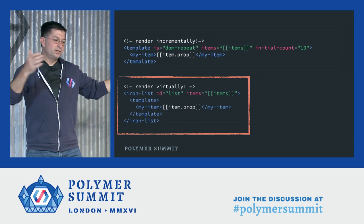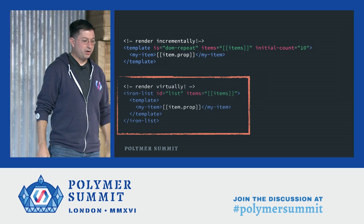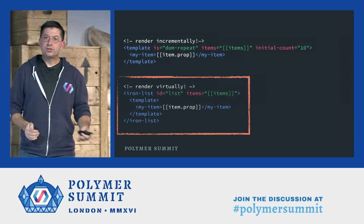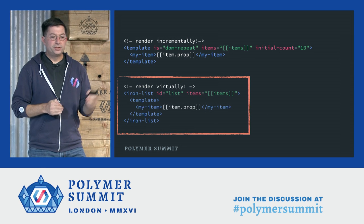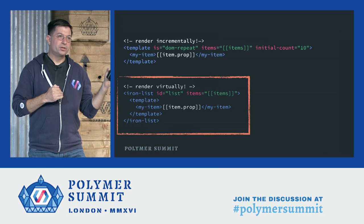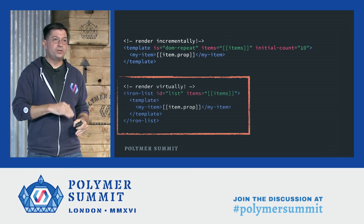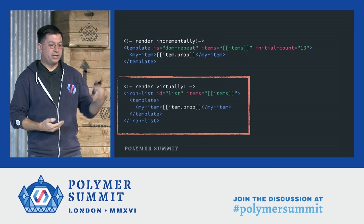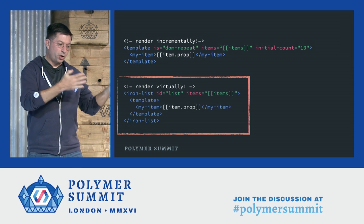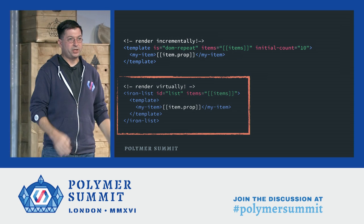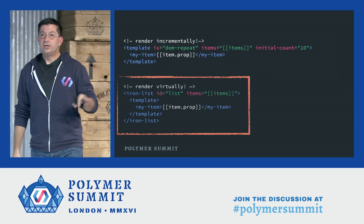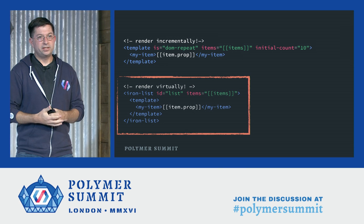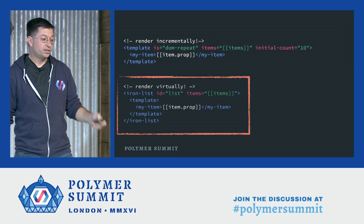Another way to accomplish something similar is to use iron-list, which offers even better performance than dom-repeat because iron-list only ever renders just a bit more elements than will fit on the screen. As the user scrolls, those elements are reused and the appropriate model items are displayed. Use iron-list when you have a fixed viewport height and the content of the list is mostly homogenous.